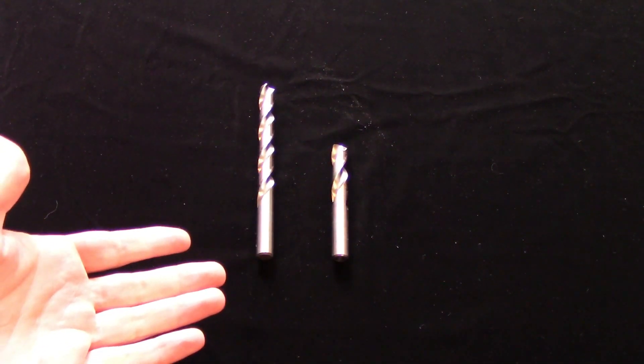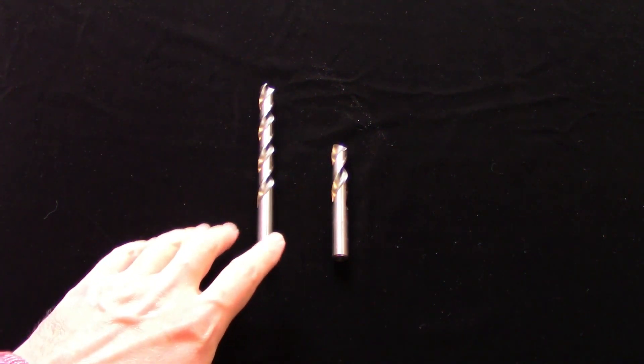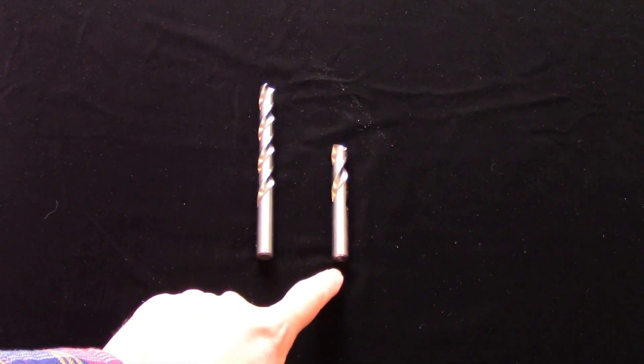First, let's talk about drill lengths. All machinists should be familiar with the two most common lengths of twist drills: jobber length and screw machine length.